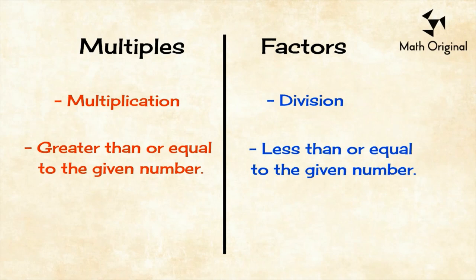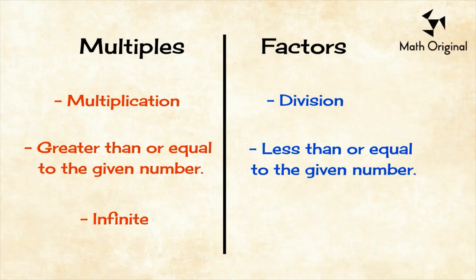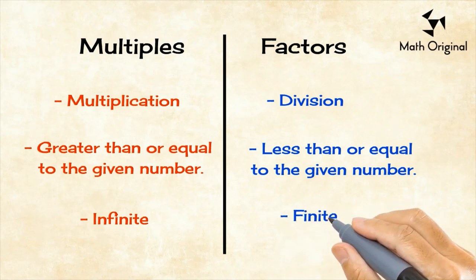We multiply the given number with natural numbers to have the multiples and since the natural numbers are infinite, we have an infinite of multiples. On the other side, since the largest factor is the number itself, then we have less than or equal to the given number, so we have finite numbers.